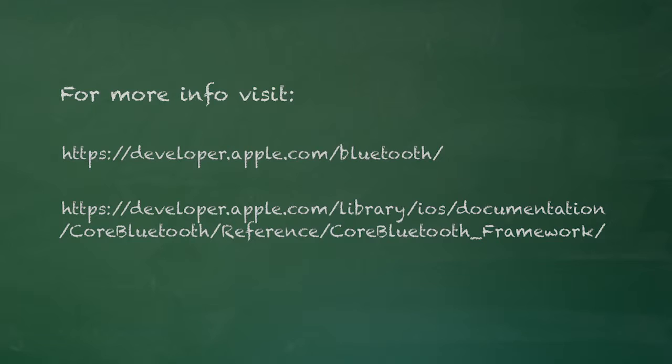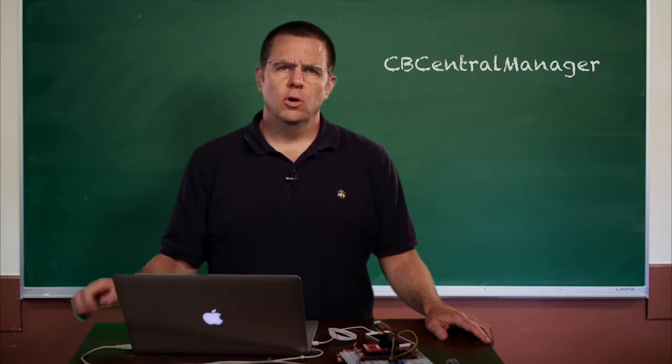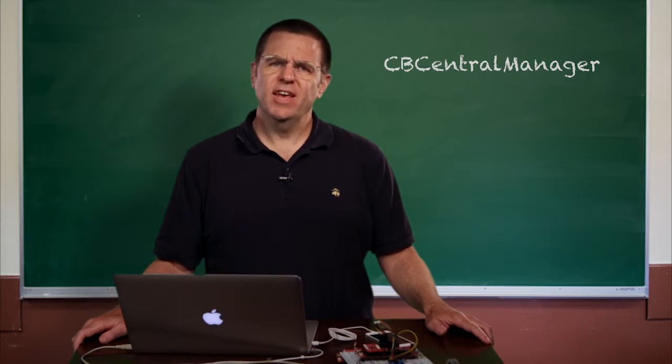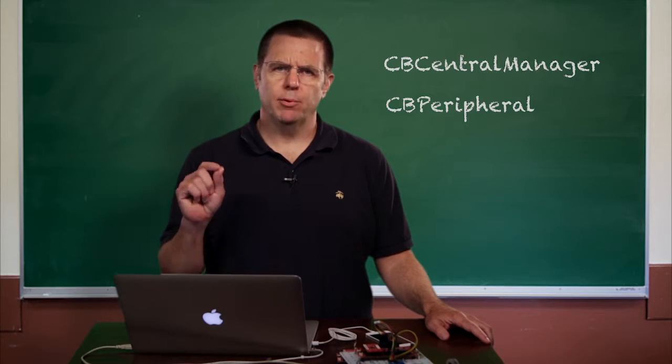First, a little background. Apple provides a framework called Core Bluetooth that is completely documented in the Development Center. There are two key objects in that framework: the CB Central Manager, which is an object to represent the GAP central that resides inside of the iPhone, and the second key object is CB Peripheral, which represents a specific GAP peripheral.